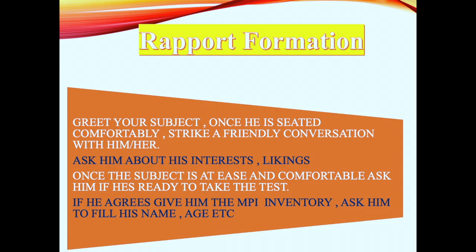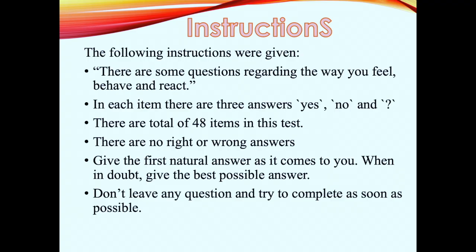Ask the subject to fill in their name, age, etc. After filling in the basics, give the following instructions: 'These are some questions regarding the way you feel, behave and react. In each item there are three answers: yes, no, and question mark. There are a total of 48 items in this test. There are no right or wrong answers. Give the first natural answer as it comes to you. When in doubt, give the best possible answer. Don't leave any question and try to complete as soon as possible — usually people take 15 minutes.'